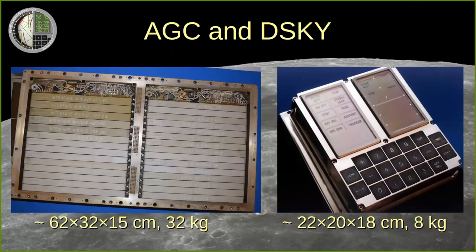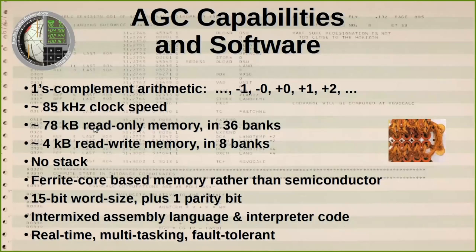Here on the left, we see the interior of an AGC. On the right, we see the astronaut's interface to the AGC, the display keyboard, or DSKY. By modern standards, the AGC had a pretty novel design. It was very slow and had a very small memory. On the other hand, the real-time, multitasking, fault-tolerant executive software was quite sophisticated, given the limited hardware resources available.